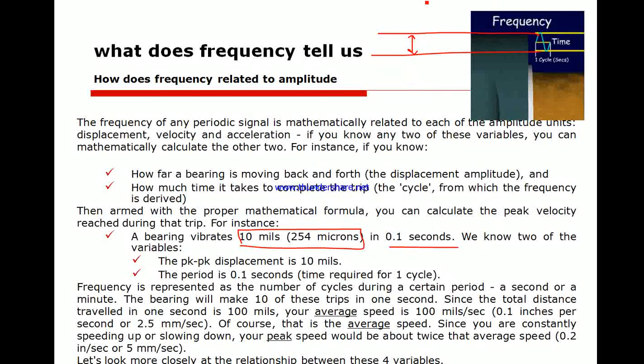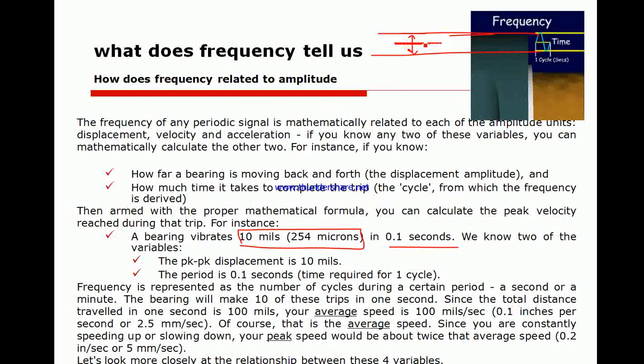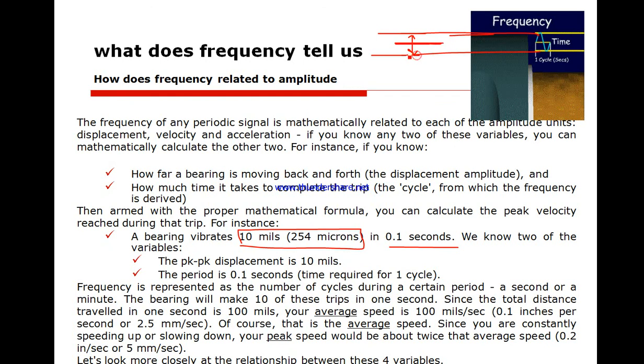Here at the edges, the speed will be zero because it's reversing direction, and it's maximum here in the middle. It's zero here because it's reversing direction to go back, and zero here to go back. This is the position in the middle.